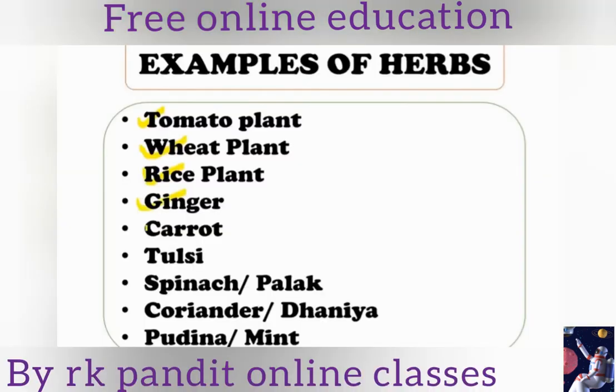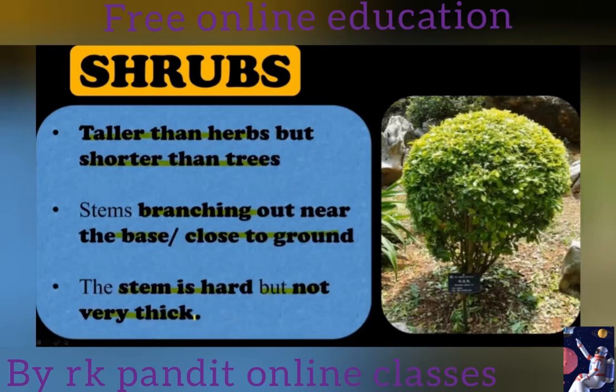All are examples of herbs. Tomato, rice, ginger, carrot, etc. are also examples of herbs. Now we are going to talk about shrubs.